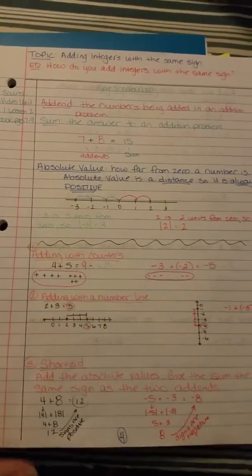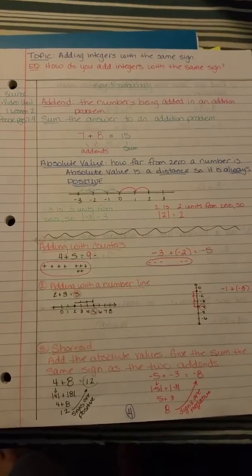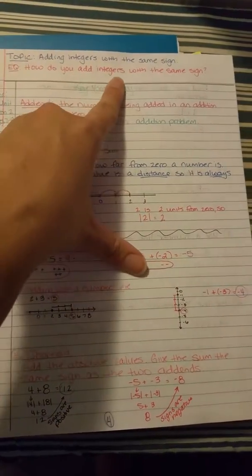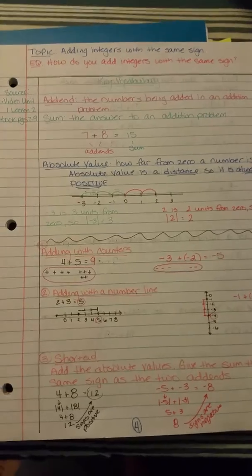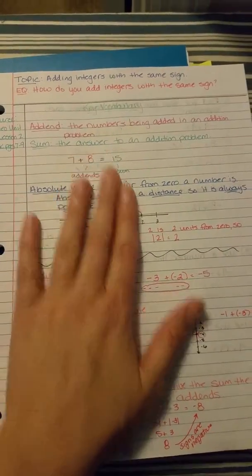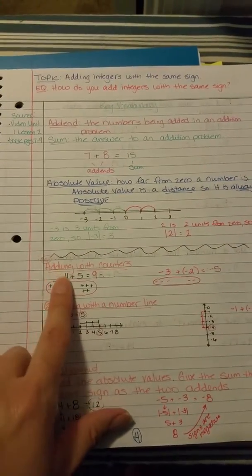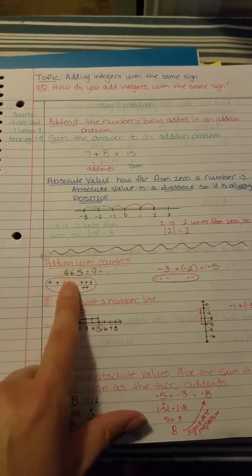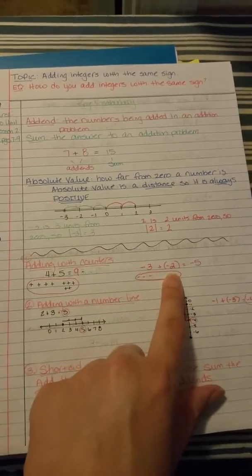And then page four, which is as far as you need to be right now, starts out at the top with adding integers with the same sign. So if you look at this side of your notebook, this side is talking about adding integers with counters. Here's positive integers, here's negative integers.